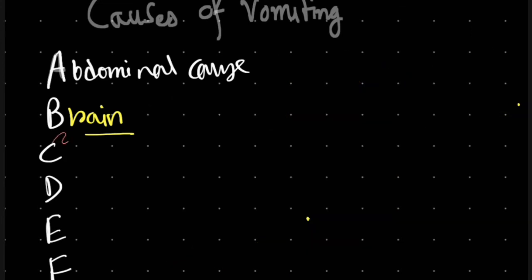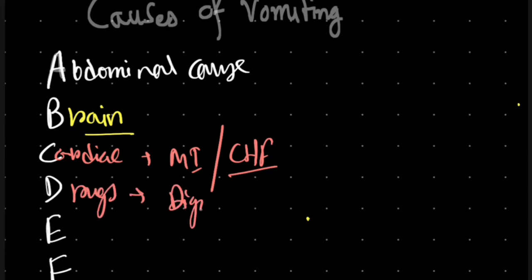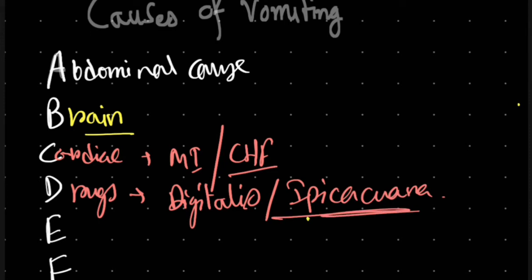C is for cardiac causes related to the heart, like MI (myocardial infarction) and CHF (congestive heart failure). These can induce vomiting. D is for drugs. Drugs like digitalis or ipecacuana are agents that can cause vomiting.